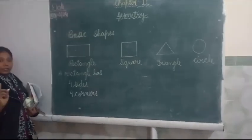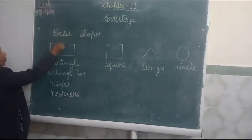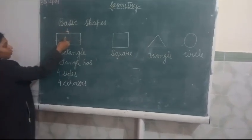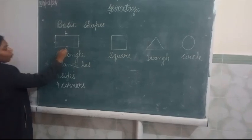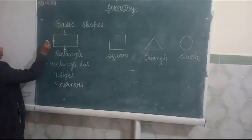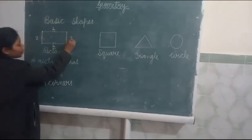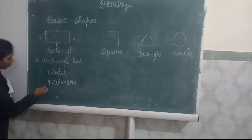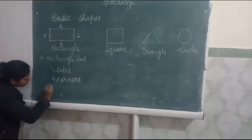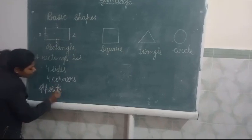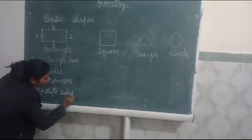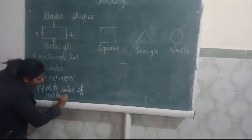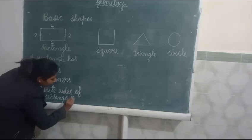One point is very important. In a rectangle, opposite sides are equal. For example, if this side is one, it means the opposite side is equal. One. And this side is two, this side is also two. So we say the opposite sides of a rectangle are equal.